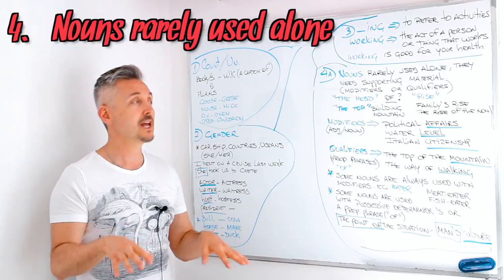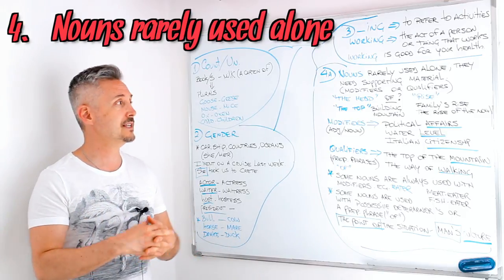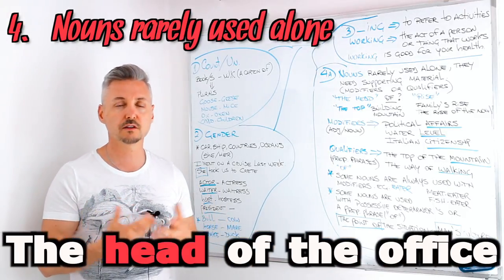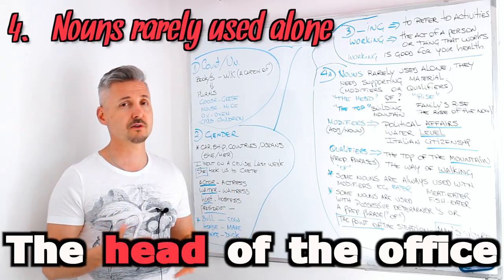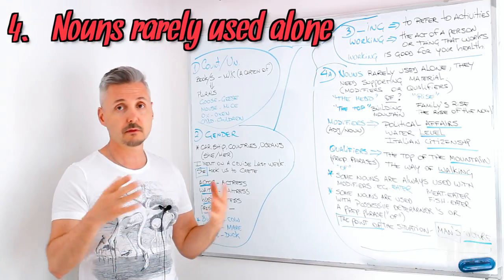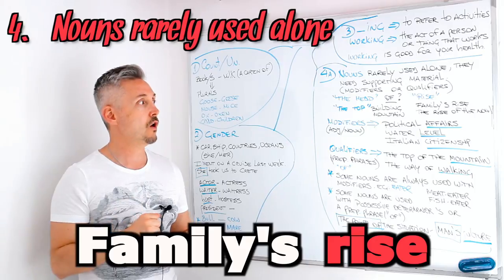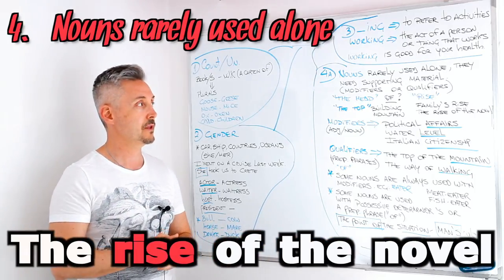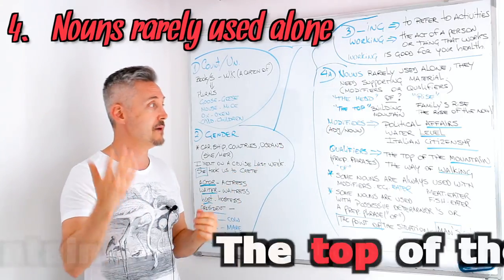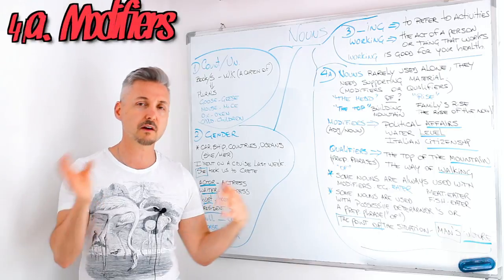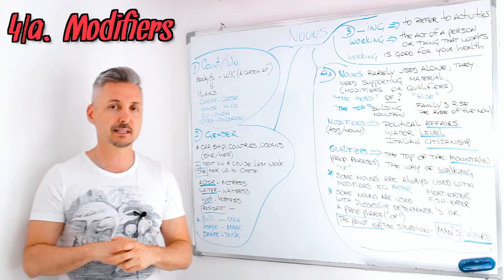The next point is that nouns are rarely used alone. They need supporting material like modifiers or qualifiers. For example, 'the head' — the head of what? The head of the office, the head of the company. Or 'rise' — not the verb, but the noun: 'the rise of the novel.' Or 'the top of the building,' 'the top of the mountain.' What are modifiers? They are adjectives or other nouns.